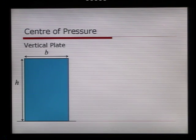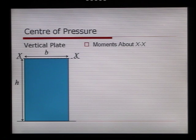By turning the dam through 90 degrees, we're looking at it now face on. We can see that it has a height h and a width b. We're going to take moments about a point xx along the surface.